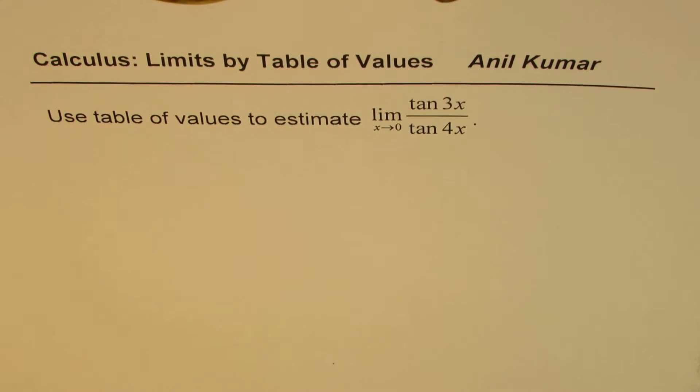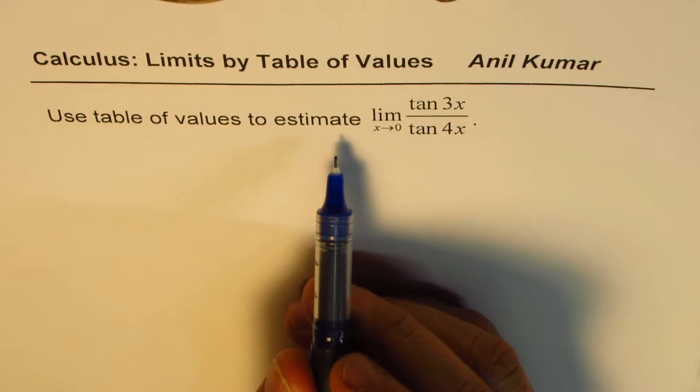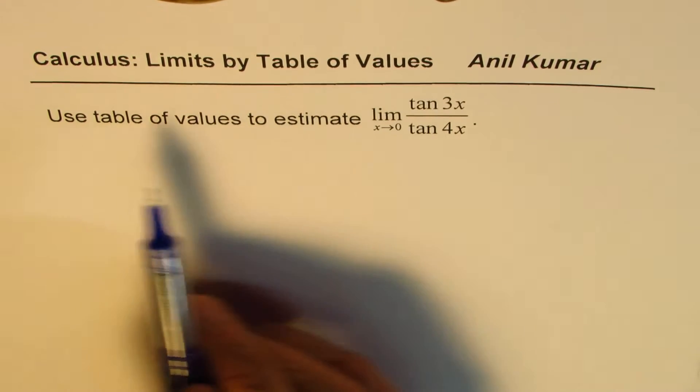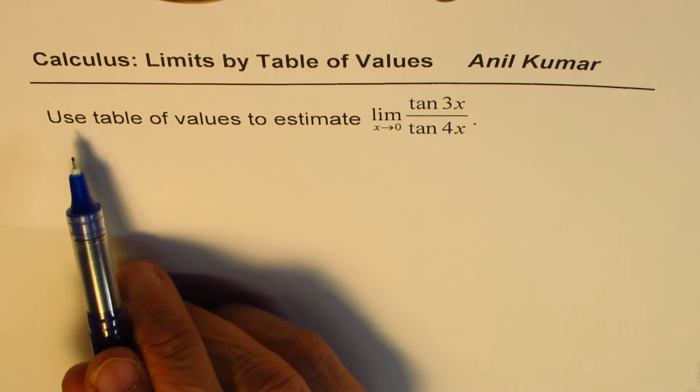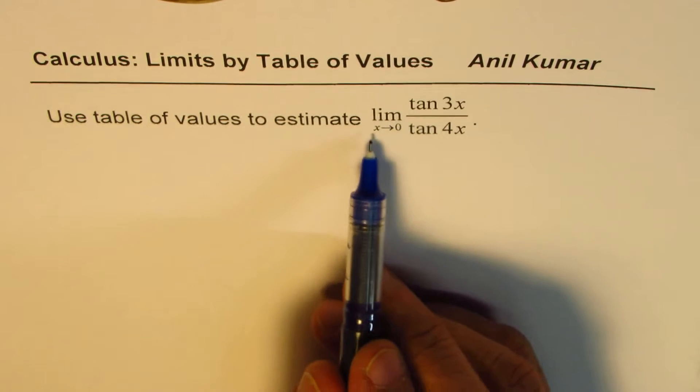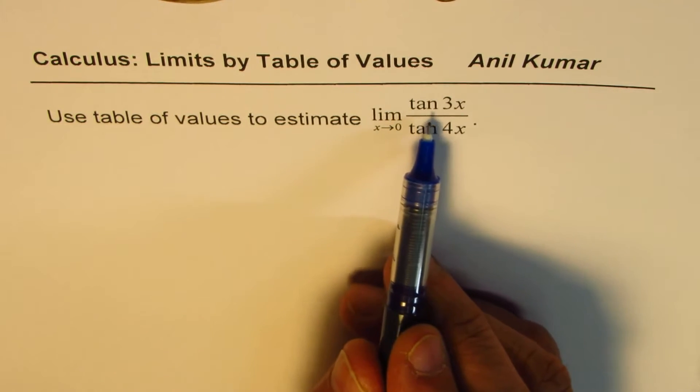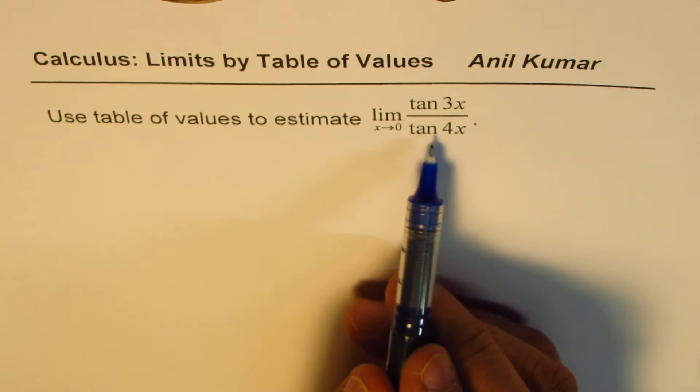I'm Anil Kumar and in this video we'll evaluate limits using table of values. The question here is, use table of values to estimate limit when x approaches 0 for tan 3x divided by tan 4x.